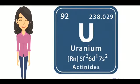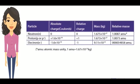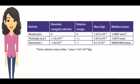This is Uranium with atomic number 92 and mass number 238. These are the fundamental particles present in the nucleus.